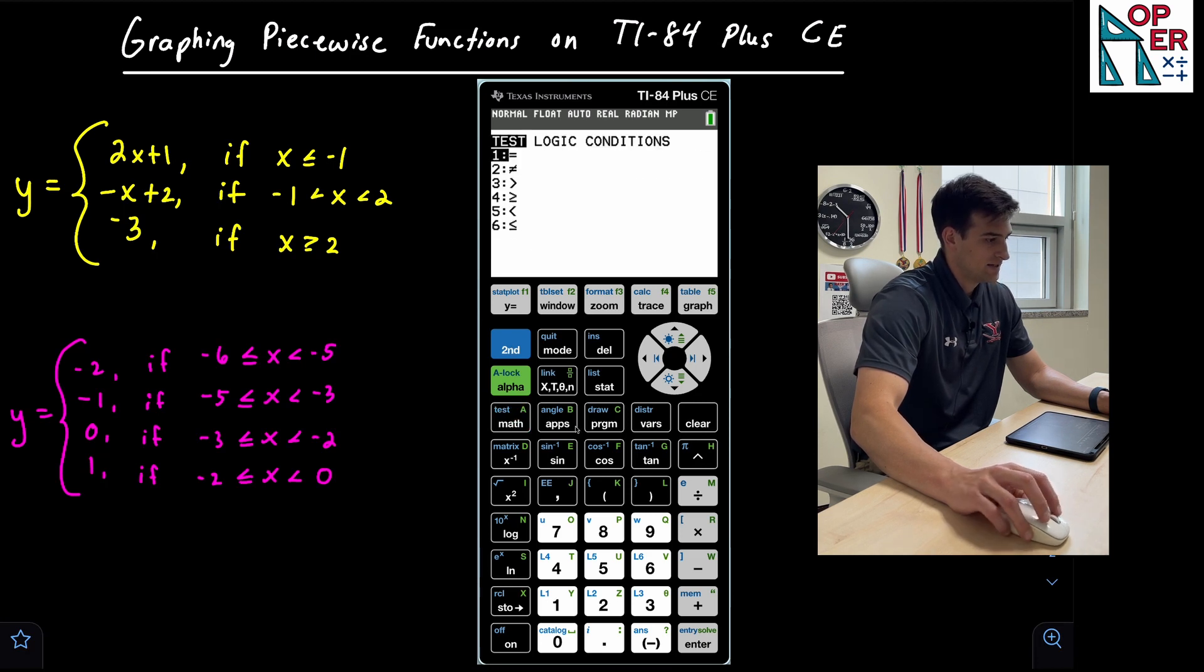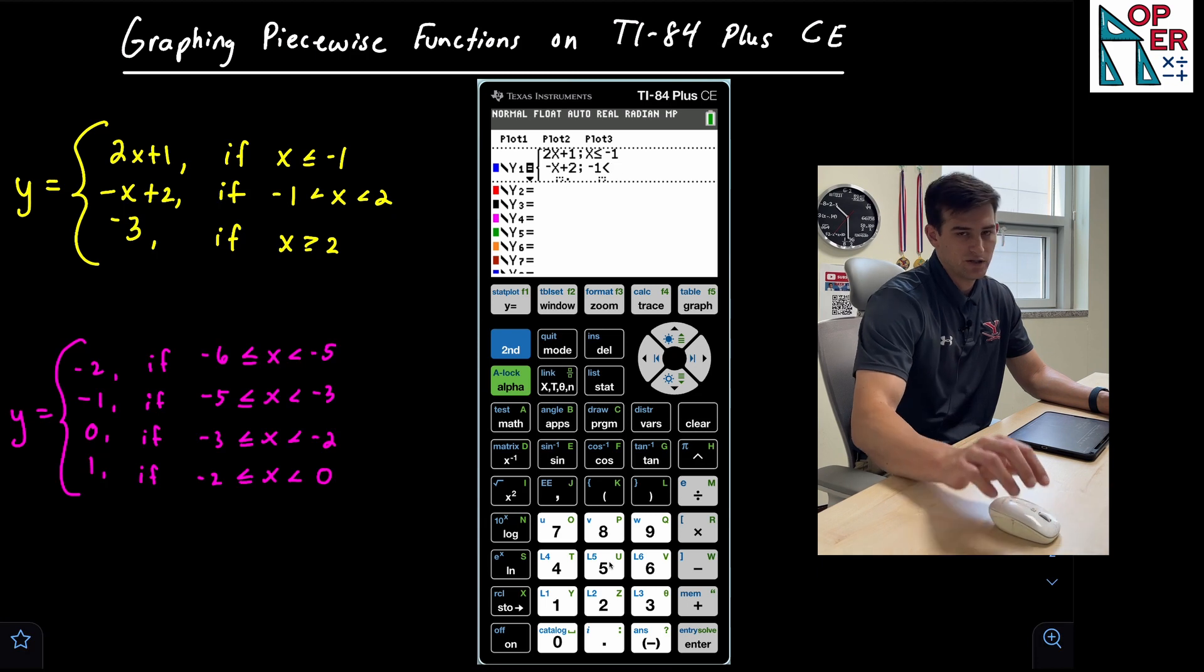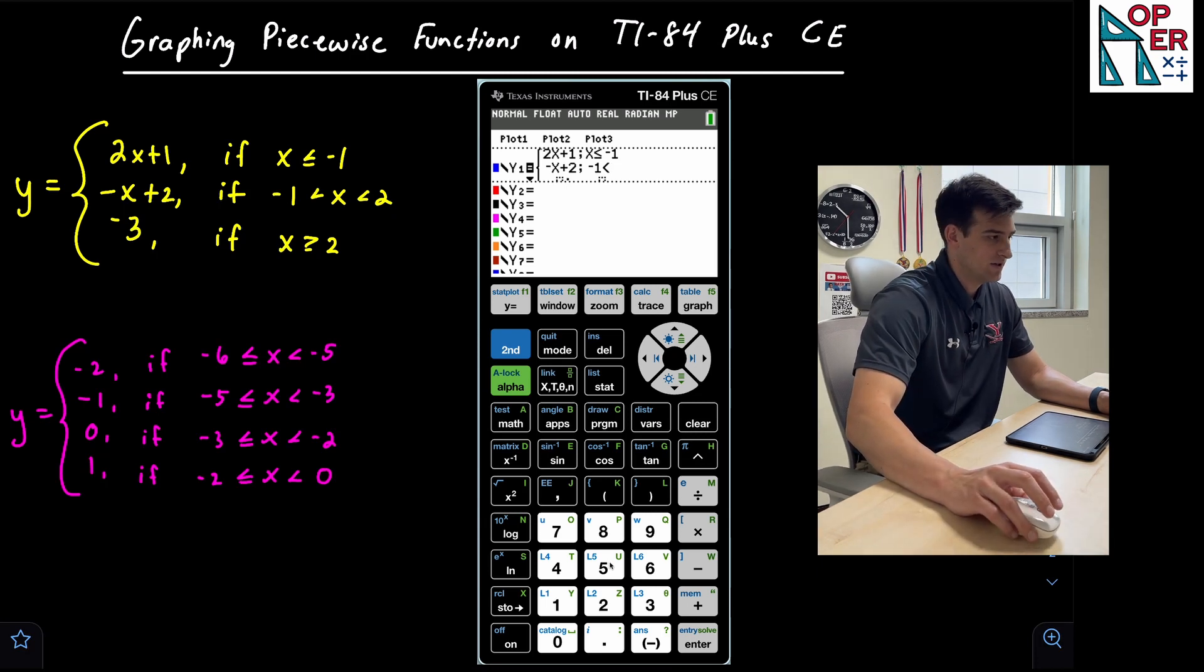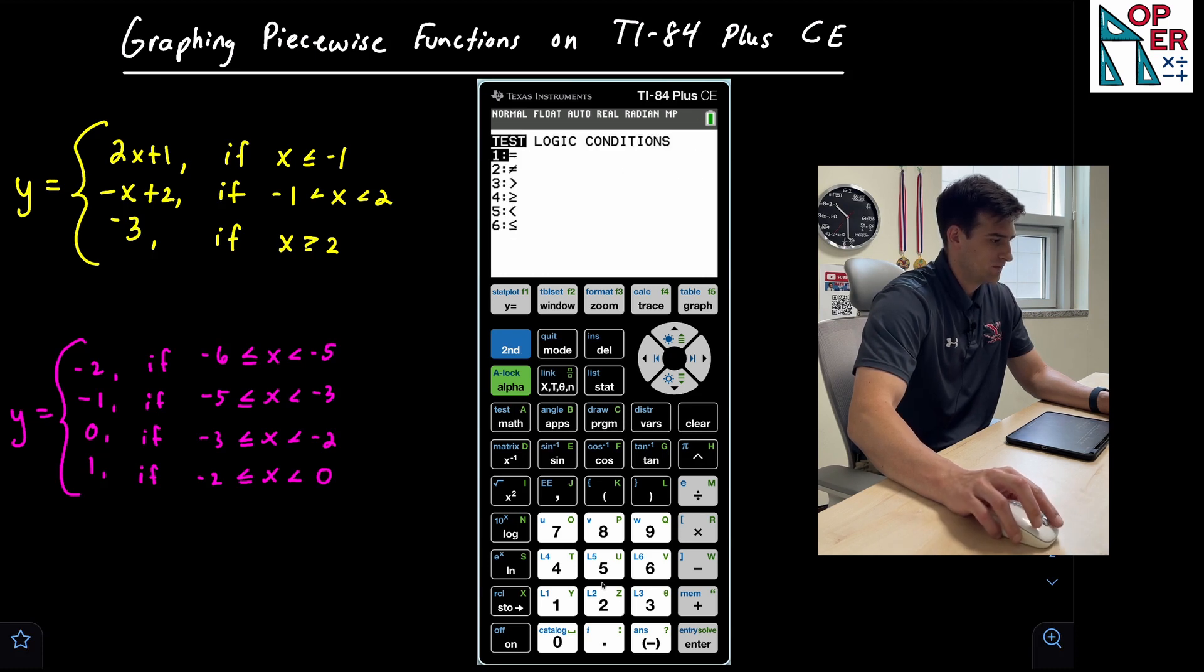And now we want just less than. So that would be the fifth option. Notice how we can just hit the five key and it'll give us that less than symbol. And then we want our variable X. And now we wanna have another less than symbol. Okay, so less than, and it goes all the way to two.